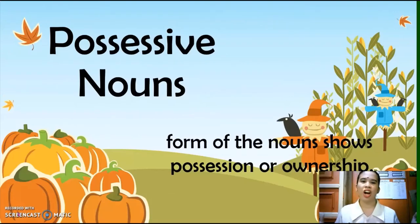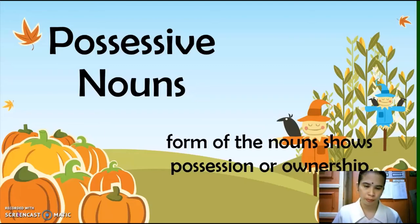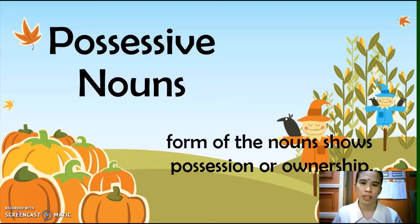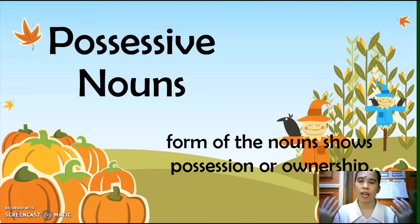And that's all for the partitive nouns. Let's proceed to the possessive nouns. Possessive nouns form of the nouns shows possession or ownership. For example: 'I possess a car,' meaning I own the car or I have a car.